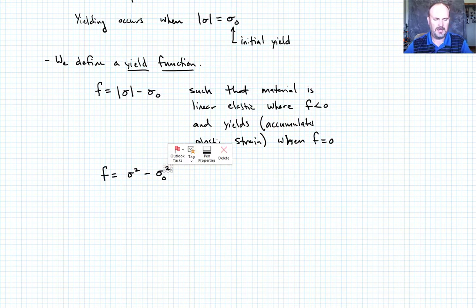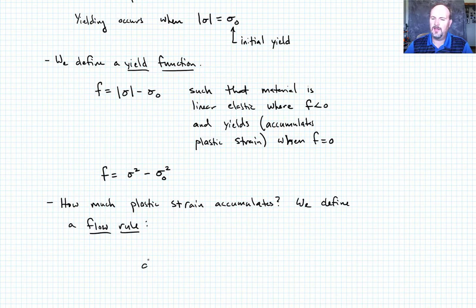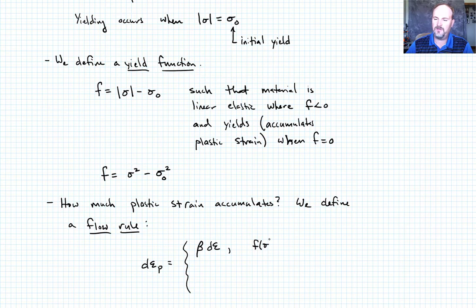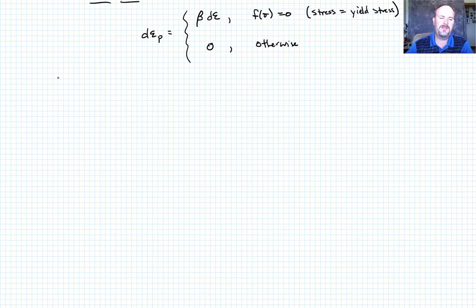The next question is how much plastic strain accumulates. To answer this we define a flow rule. The plastic strain increment d_epsilon_P equals beta times the total strain increment d_epsilon when yielding is happening (i.e., f(sigma) = 0), and zero otherwise. This captures when and how the plastic strain grows.